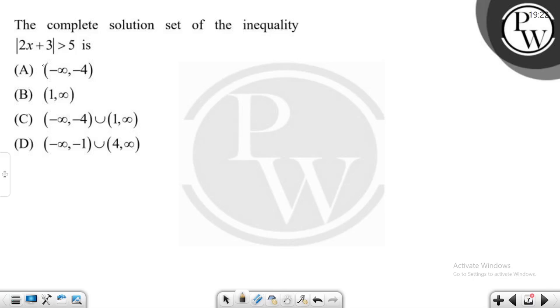Let us see this question. The question says that the complete solution set of the inequality mod of 2x plus 3 is greater than 5. Now what is the mod?